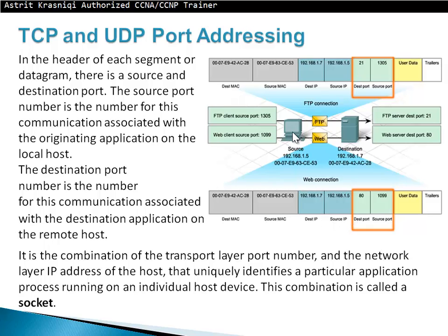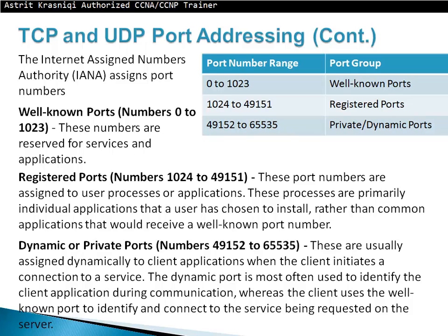For example, a source client communicating with a server using FTP has destination port 21 and a randomly chosen source port of 1305. The same client navigating a website has destination port 80 and source port 1099. Combining both the source and destination port numbers with the source and destination IP addresses is known as a socket. Port numbers are defined in three groups: well-known ports from 0 to 1023, registered ports from 1024 to 49151.